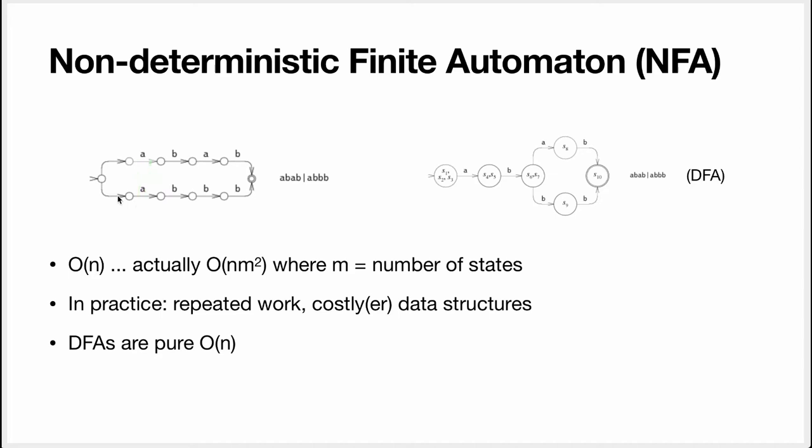So you can see for the NFA that we indeed have multiple transitions with the same letter. Actually we have here empty transitions but you can just imagine that it goes from here to there directly with A.